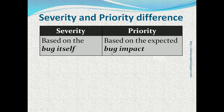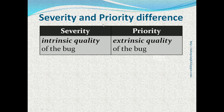Priority is based on the expected bug impact, meaning the problem to the business, clients, or users. Another way to look at the difference: since severity depends on the bug itself, it is an intrinsic quality of the bug. Priority depends on the speed with which the bug needs to be fixed, and is an extrinsic quality of the bug because it is based on someone's judgment.